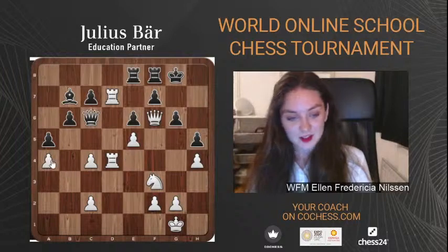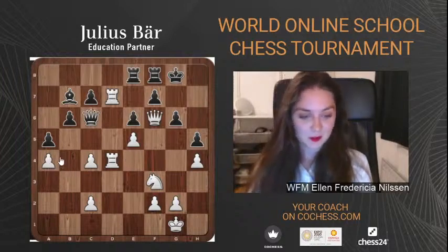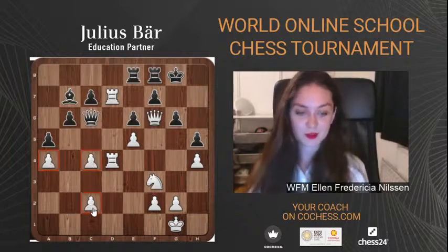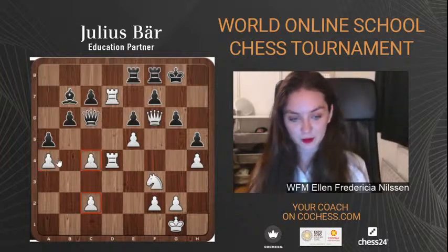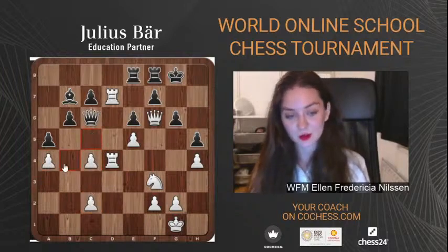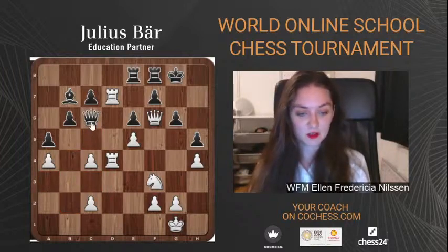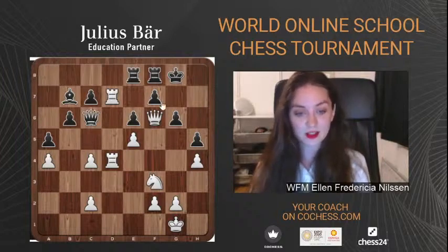In this position we also see that on the queenside, White has split pawns on c2, c4, and a4, which means White's dark squares on the queenside are very weak. But in this position Black cannot really do anything to exploit these squares, as all the action is on the kingside.